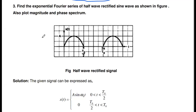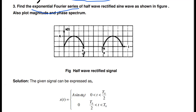Welcome to my channel. Now we are going to solve one Fourier series problem: the exponential Fourier series of a half wave rectified signal. We already solved the half wave rectified sine waveform in the trigonometric Fourier series, but now we are going to find the exponential Fourier series representation. We will also draw the magnitude and phase spectrum.